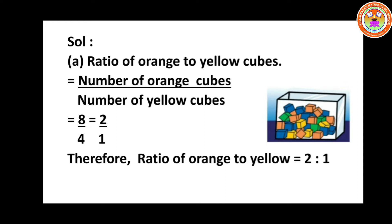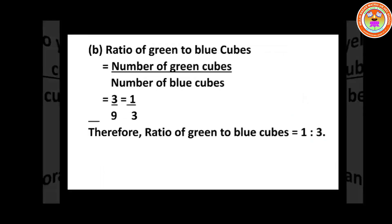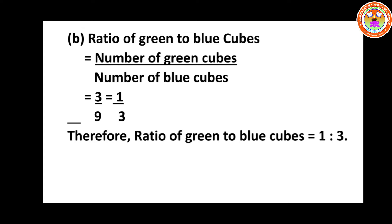Inside the box there are four different colors: blue, yellow, orange, and green. Number of orange cubes divided by number of yellow cubes equals 8 divided by 4. Cancel in the 4 times table: 2 by 1. Therefore ratio of orange to yellow is 2 is to 1. Option B: ratio of green to blue cubes — number of green cubes divided by number of blue cubes equals 3 divided by 9, which equals 1 by 3. Therefore the ratio of green to blue is 1 is to 3.